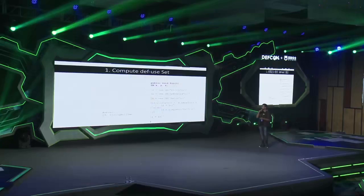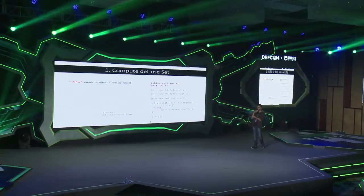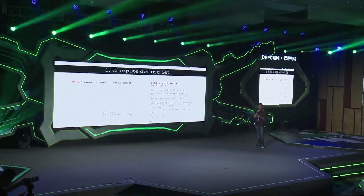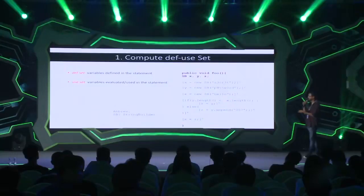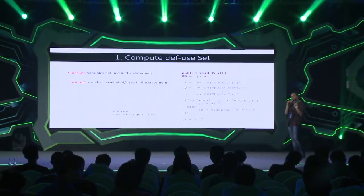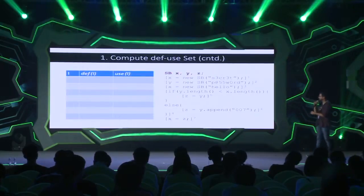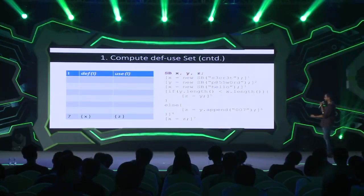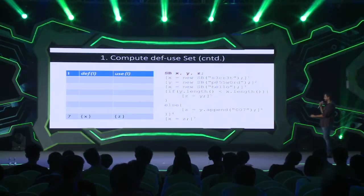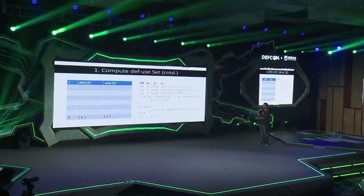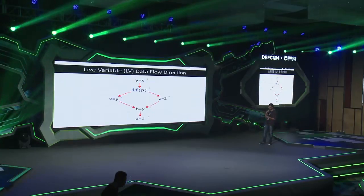The definition set contains all variables defined in a particular statement — so for statement 1 where x is defined, the def set has x. The use set contains variables used in a statement. Computing the def-use sets for this example: z is used in statement 7, so it goes in the use column; x is defined there, going in the def column. The direction of propagating data flow facts is from bottom to top — the reverse order of execution.